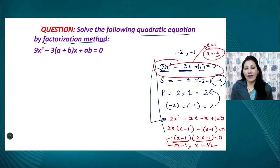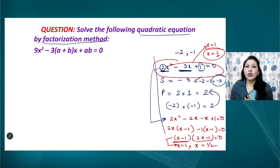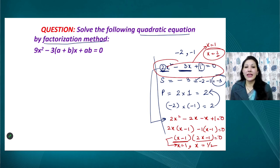Dear viewers, note that a quadratic equation has degree 2, so it has a maximum of two solutions. Both solutions could be equal — for example x = 3 and x = 3 — but there can never be three or four solutions for a quadratic equation. The maximum number of solutions is always 2.